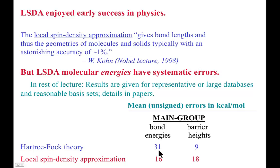On those same datasets, LSDA reduces the error in bond energies by a factor of two to about 16 kcal/mol — a non-trivial improvement, though still quite large — but it increases the error in barrier heights by a factor of two. So LSDA hasn't dramatically surpassed Hartree-Fock, but given that it's faster, formally includes electron correlation, and provides a good foundation, it's clearly a basis for further development. In the next video we'll look at the step taken after LSDA that leads to considerably improved performance.